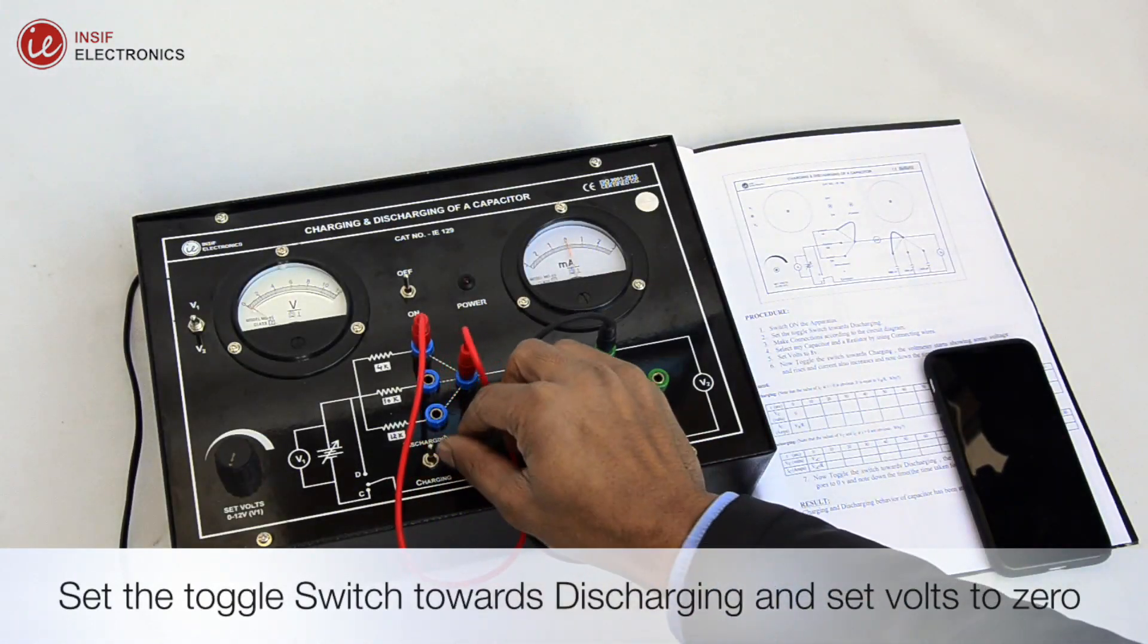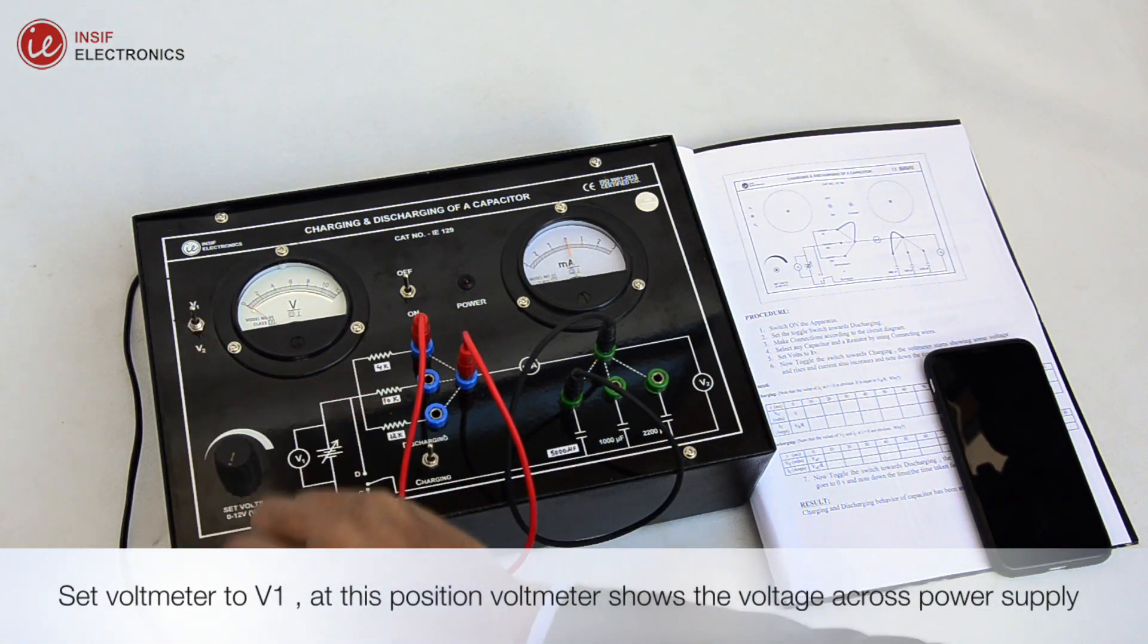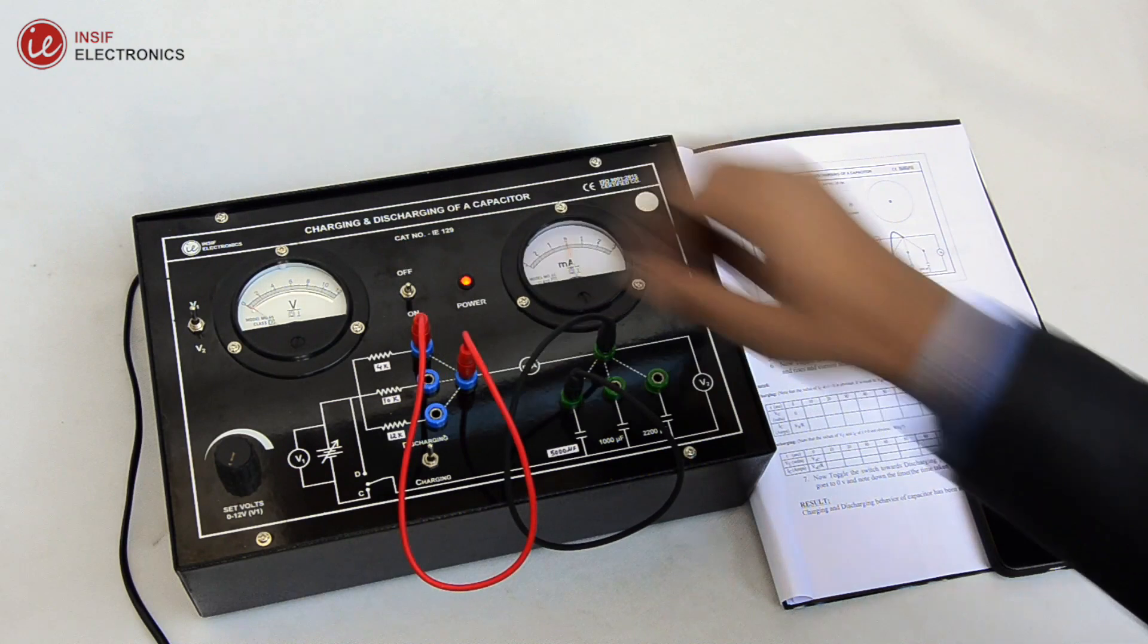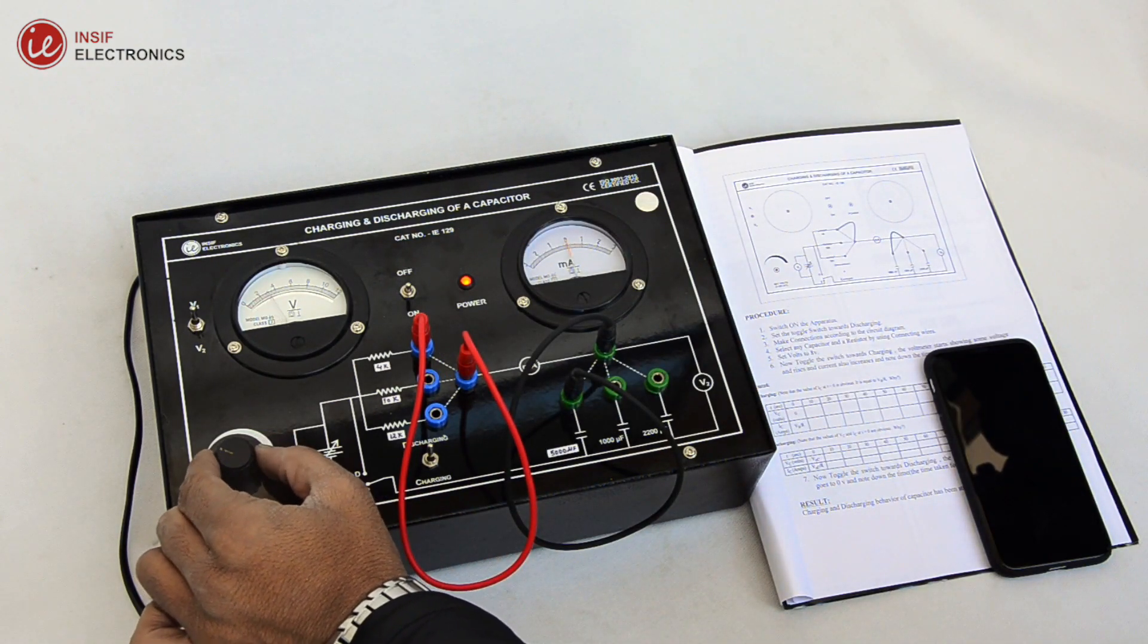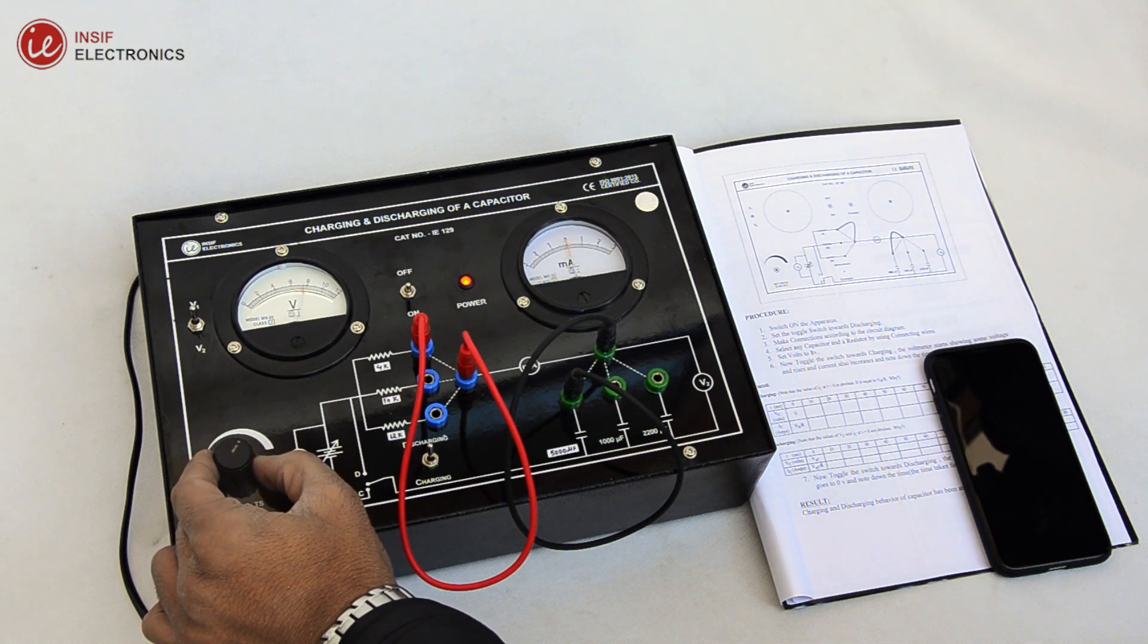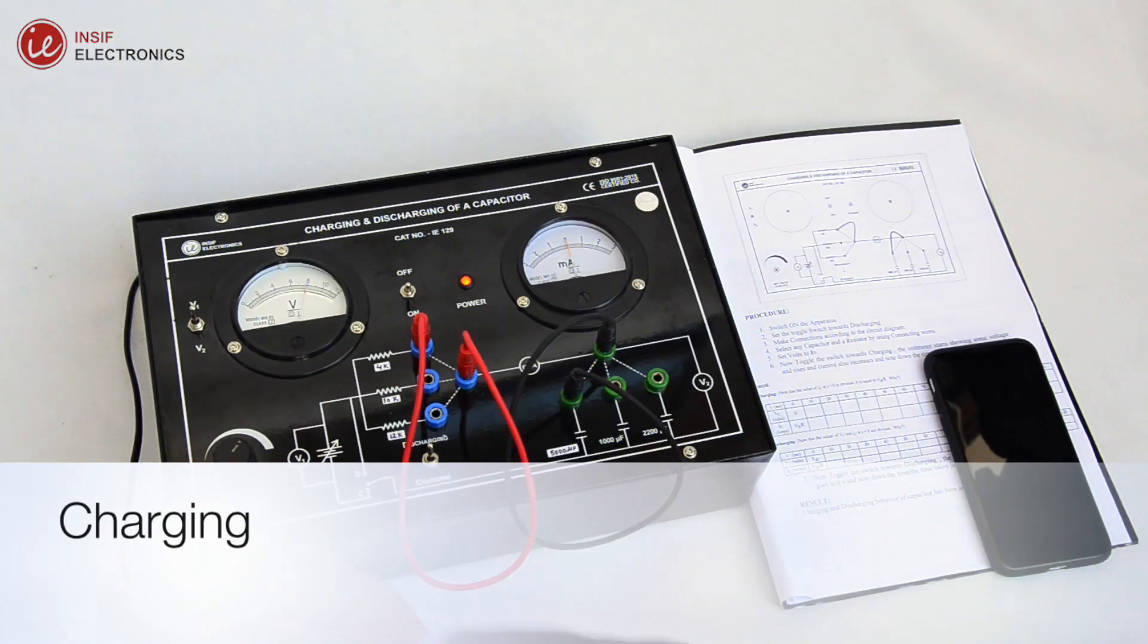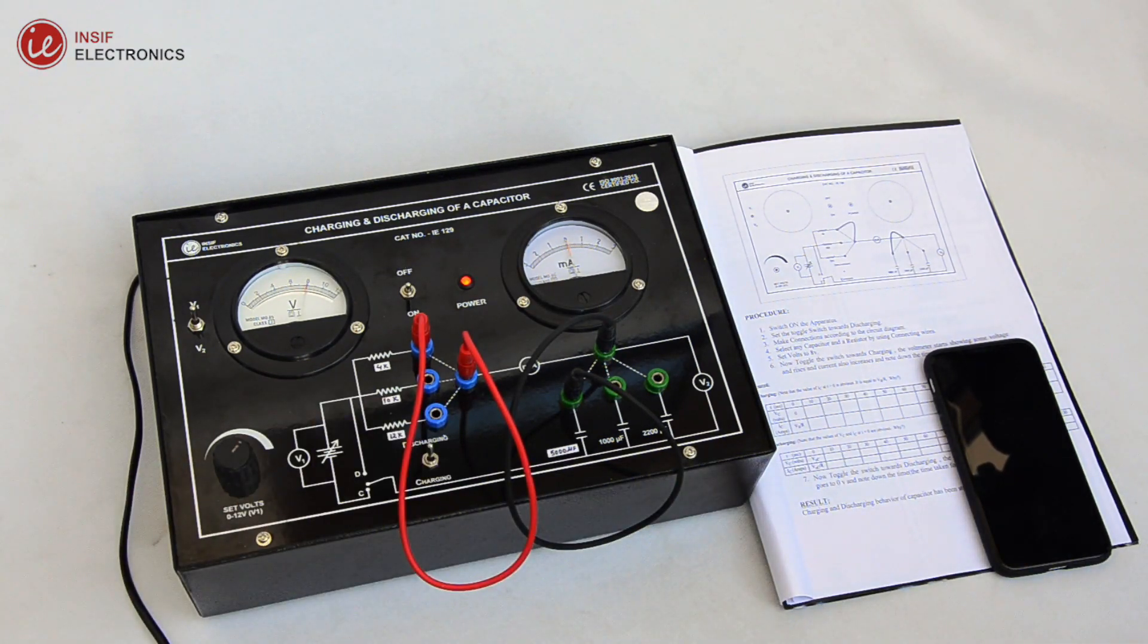Set the toggle switch towards discharging and set volts to zero. Set voltmeter to V1. At this position, the voltmeter shows the voltage across power supply and switch it on. Now set voltage to 8 volts and open stopwatch.